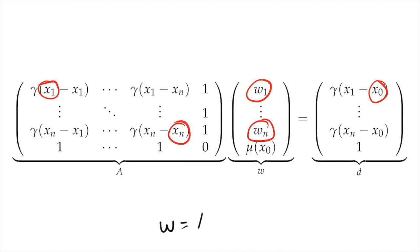So, we solve for w by passing the A matrix to the right side and inverting it.